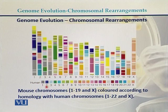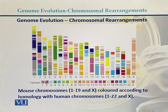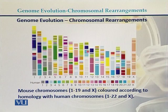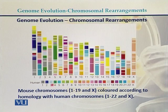Another example is chromosome 2. In the case of human chromosome 2, it has homology with the p-arm, or this fragment of mouse chromosome 1, with mouse chromosome 2, and some parts of mouse chromosomes 11 and 12.